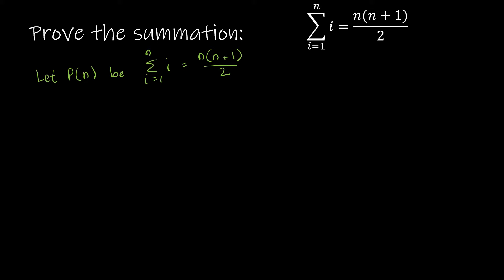Then we're going to do our basis step. Our basis step is for the least element, which is 1 — to show that P of 1 holds, getting to that first rung of the ladder. P of 1 says the summation of 1 is equal to 1 times 1 plus 1, which is 2, divided by 2. On the left-hand side I have 1, and on the right-hand side I have 1 times 2 divided by 2, which is 1. So the basis step holds.